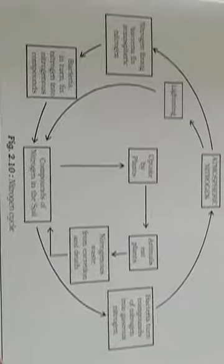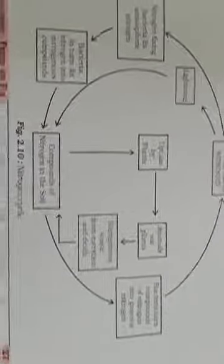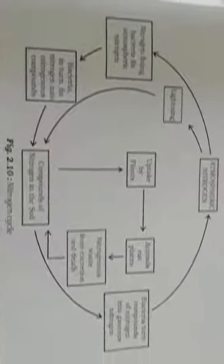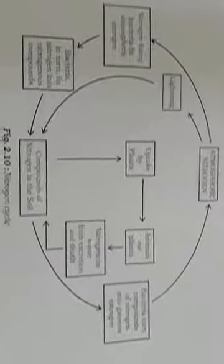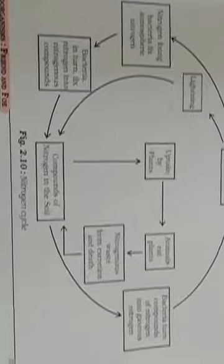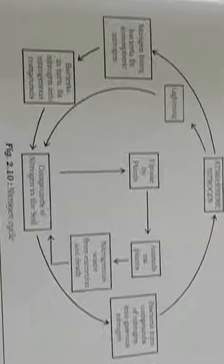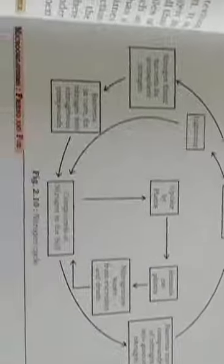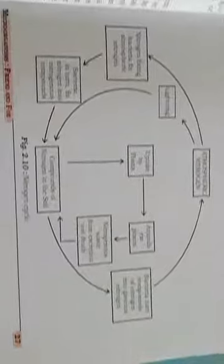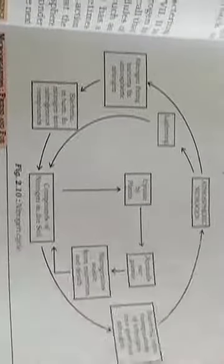After converting atmospheric nitrogen into compounds of nitrogen, the plants — considered as producers — utilize these fixed nitrogen compounds as nutrients for their growth. The nitrogen is then present in plants in the form of nucleic acids, proteins, or chlorophyll. In this cyclic manner, nitrogen maintains a constant volume in nature.